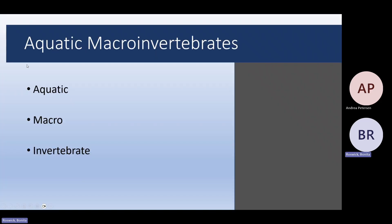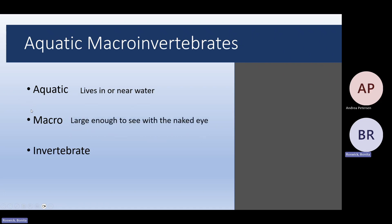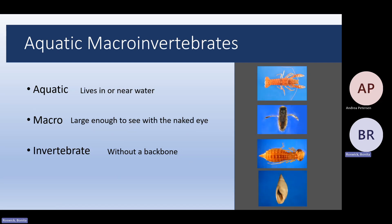This presentation is about aquatic macroinvertebrates. The first thing we need to do is figure out what an aquatic macroinvertebrate is. Aquatic means something that lives in or near water. Macro means something large enough to see with the naked eye. An invertebrate is an animal without a backbone — those are the insects. So aquatic macroinvertebrates are big bugs that live in the water, and I've got a few examples over on the right side.